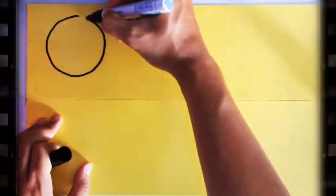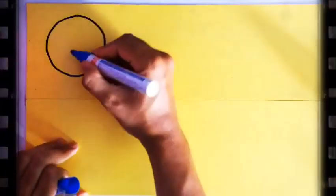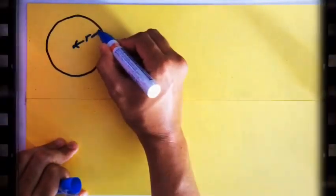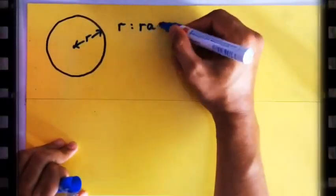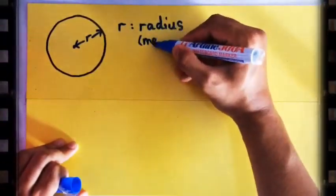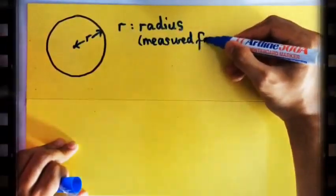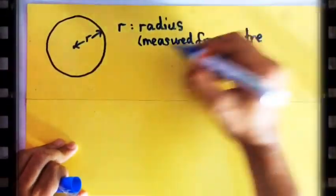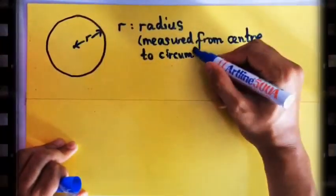Can you draw another circle? Can you use compass? I'm using my freehand because I can draw quite nice circles. Can you label from the center going to the circumference, R? That R is what we call radius, which is measured from the center towards your circumference.